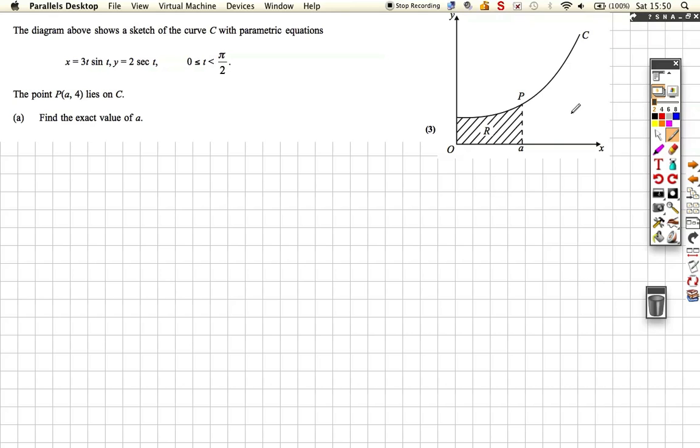Okay, so here we are. We've got another integration revision video for Core 4, for C4. This time it's a parametric one, so we've got the parametric equations for this curve C. We've got the diagram of it here, and we're asked to find the value of A. Well, A is related to the point P, and it has x-coordinate, or x-value A.